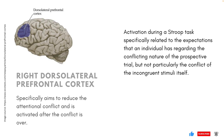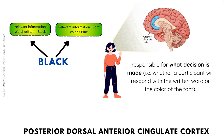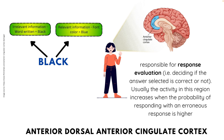Moreover, the posterior dorsal anterior cingulate cortex is responsible for what decision is made — i.e., whether someone will say the written word or the ink color in which the word is printed. Following the responses, the anterior dorsal anterior cingulate cortex is involved in response evaluation, determining whether the answer made is correct or incorrect. Usually, activity in this region increases when the probability of an erroneous response becomes higher.